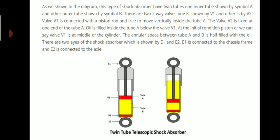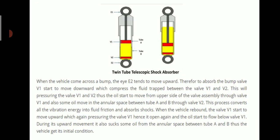In the initial condition, the piston or valve V1 is at the middle of the cylinder. The annular space between tube A and tube B is half filled with oil. There are two eyes of the shock absorber — E1 and E2. E1 is connected to the chassis frame and E2 is connected to the axle.